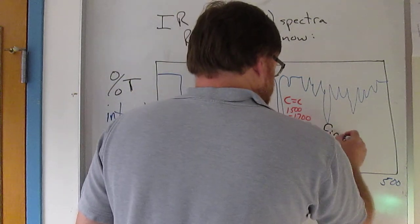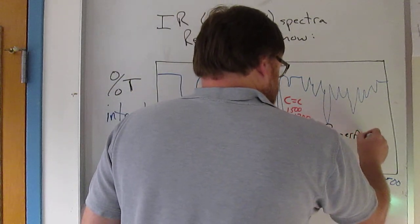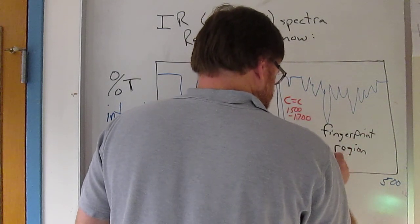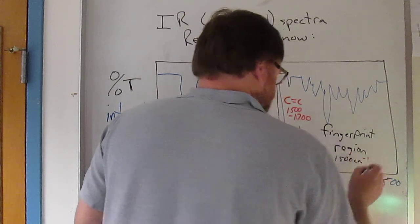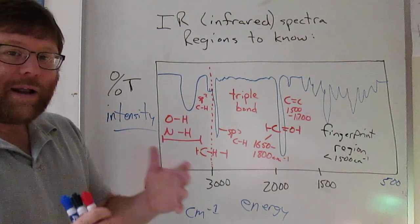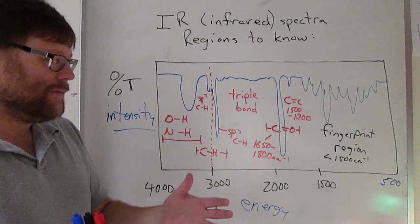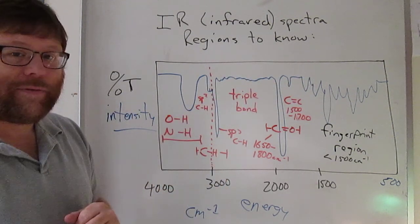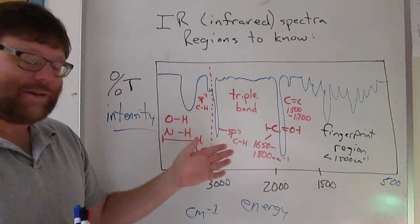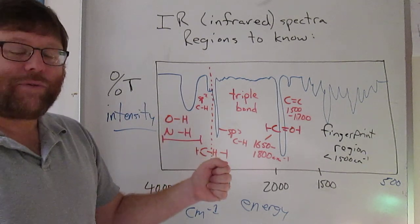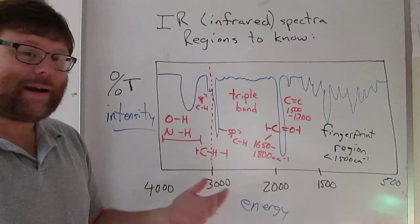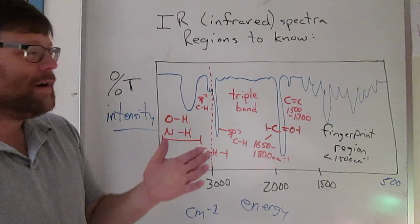And then down here, you have what's called the fingerprint region. So this would be less than 1500 wave numbers. The fingerprint region is sort of self-explanatory. Every molecule will have a different set of absorbances or percent T in that region. And if you have a standard, so let's say I have ethyl acetate, I can take an infrared of an unknown, I can compare the fingerprint regions. If they're exact, it's ethyl acetate. If they're not exact, it's not ethyl acetate.